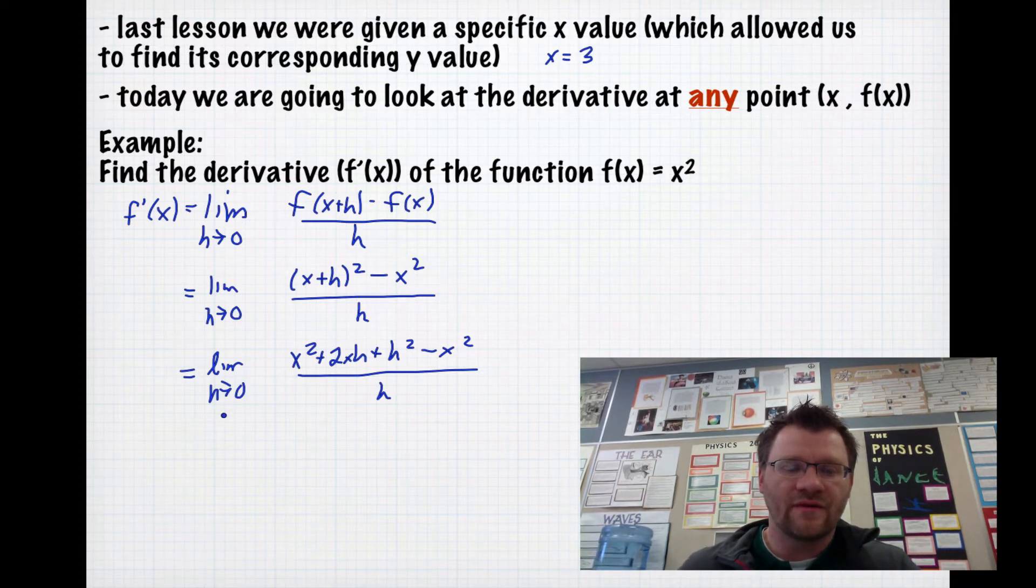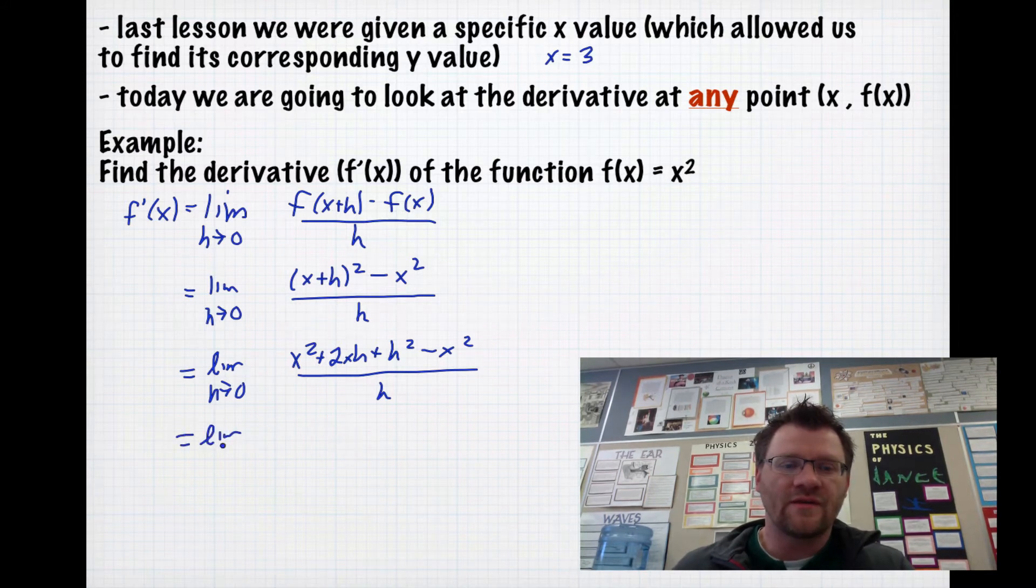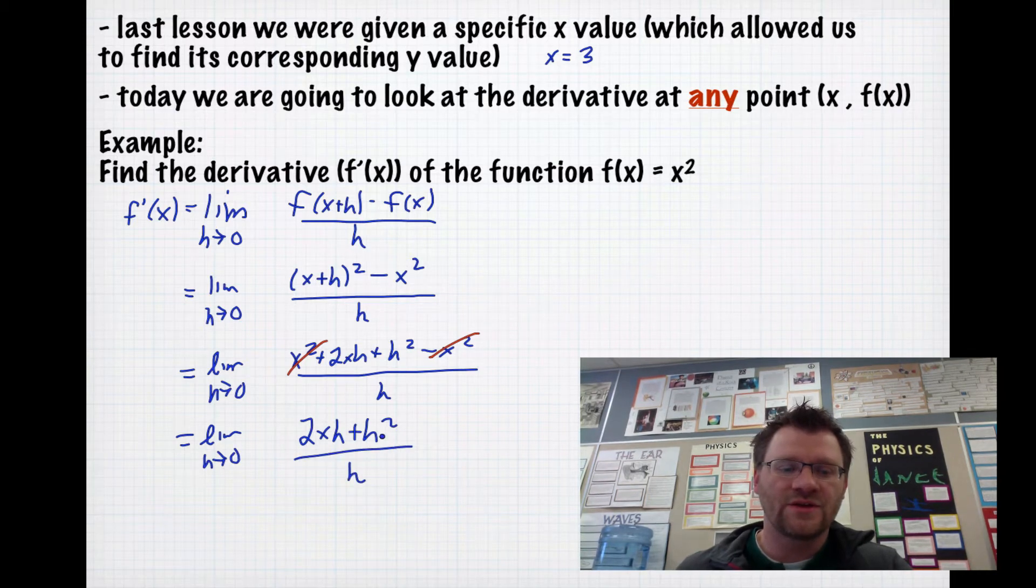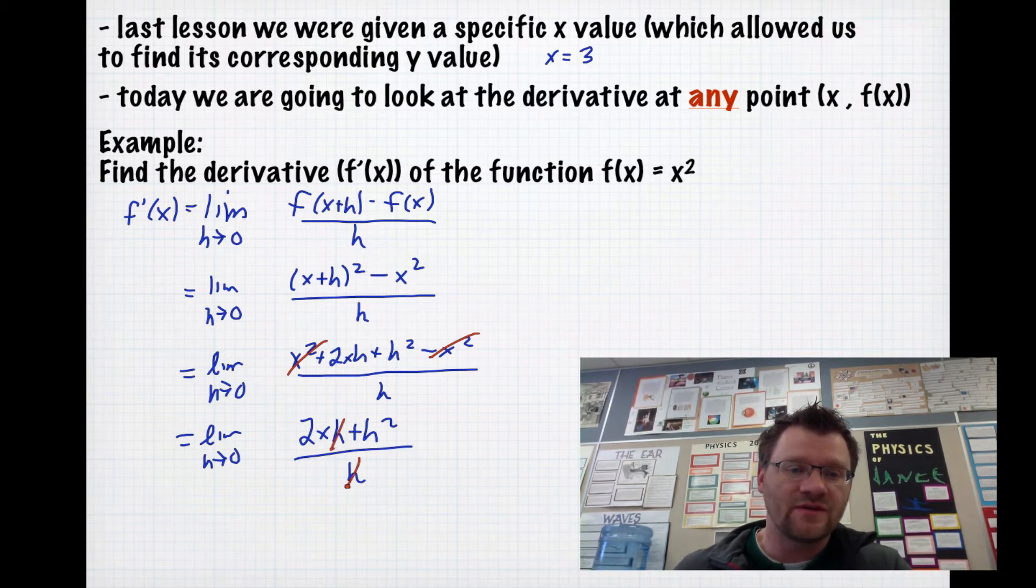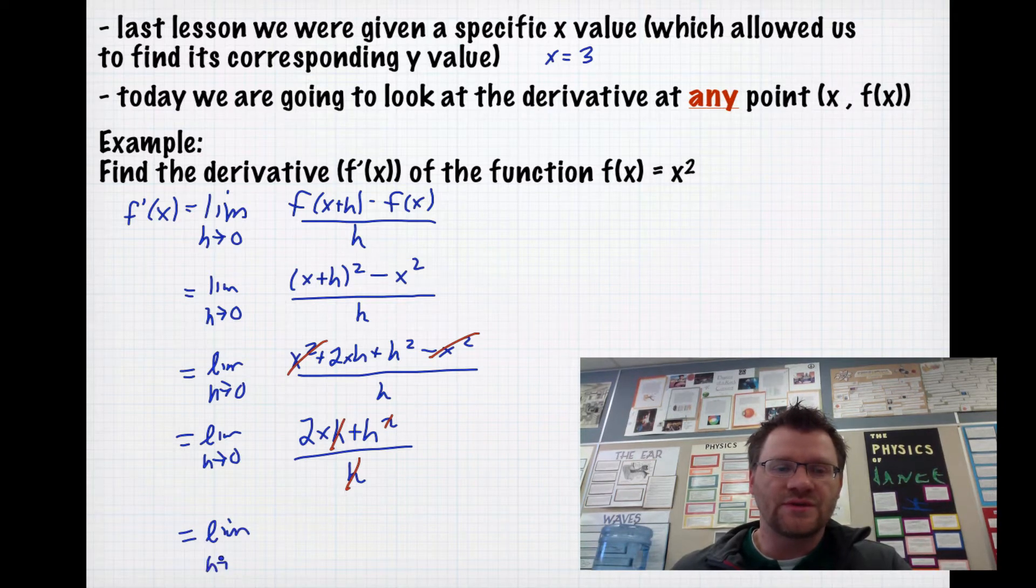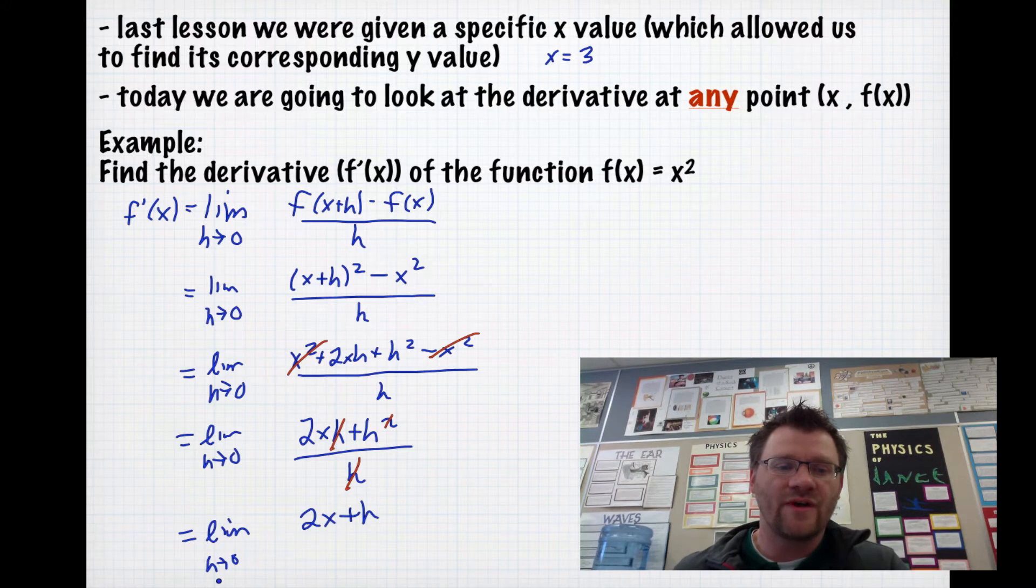Then we can do some canceling with the x² and the negative x². So we get the limit as h approaches 0, these two things cancel each other out, which leaves us with 2xh + h², all over h. Now we can start canceling out h's, so this h and that h cancel out. We get the limit as h approaches 0 of 2x + h, and now if h approaches 0, that means our limit, or our derivative, is 2x.